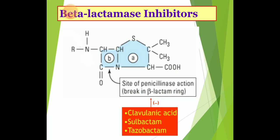In this picture you can see the site of penicillinase action where it is breaking the beta-lactam ring, thereby destroying the structure of penicillin group or other beta-lactam group of antibiotics. Clavulanic acid, sulbactam, tazobactam, and avibactam — all four of them inhibit this penicillinase enzyme. By inhibiting it, they themselves are being hydrolyzed and are not available for future use. So it is a kind of suicidal inhibition, but they also prevent penicillinase from acting on the beta-lactam ring.